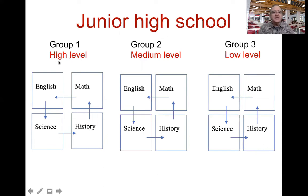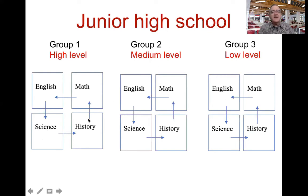Group one would be the high students. All the same students would be in first period math, then move to second period English with a different teacher, then third period science, then fourth period history — four different teachers, but the same students. Group two has the same structure, but their math, English, science, and history is a little easier. Group three is the lowest students, with very easy classes but still four different teachers.